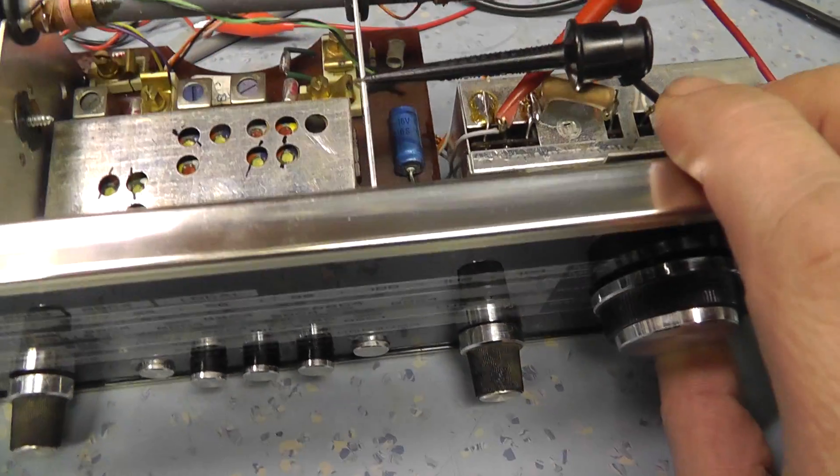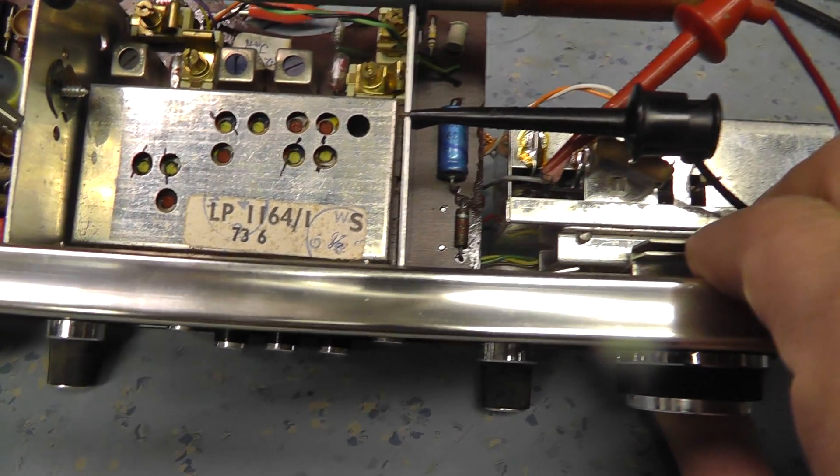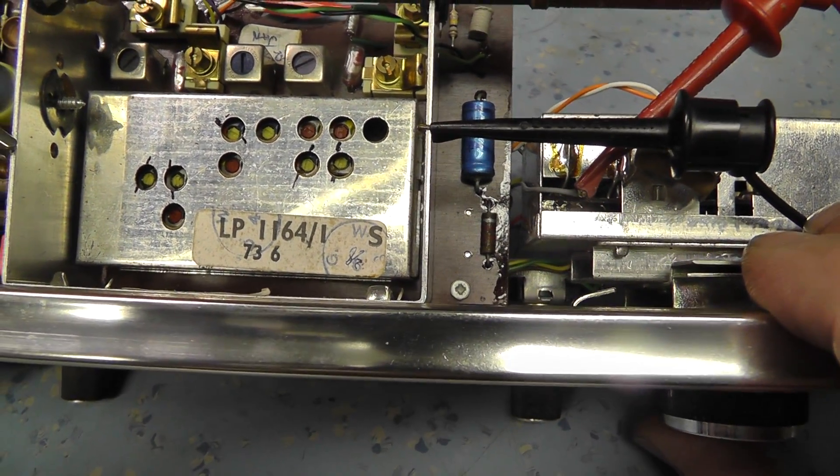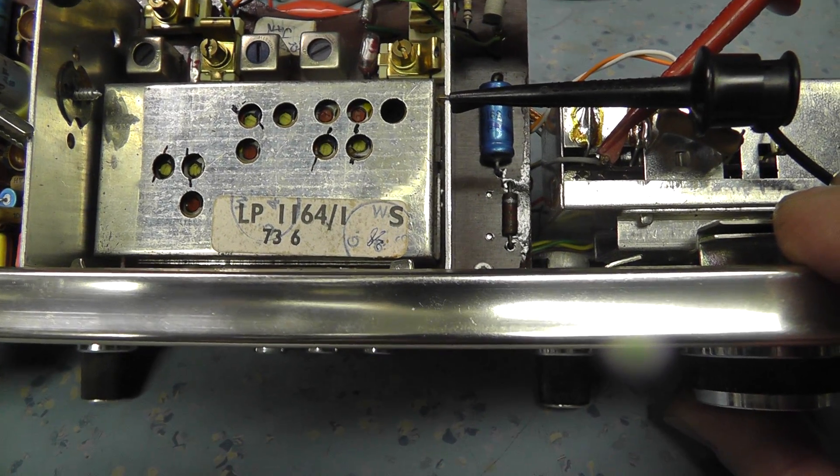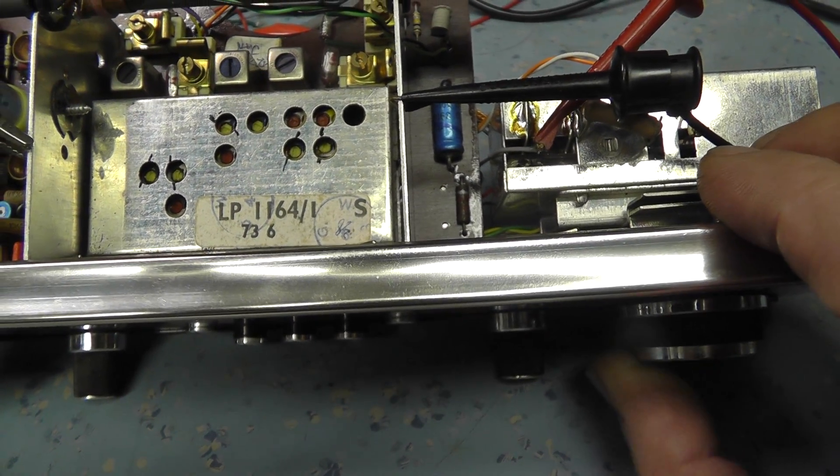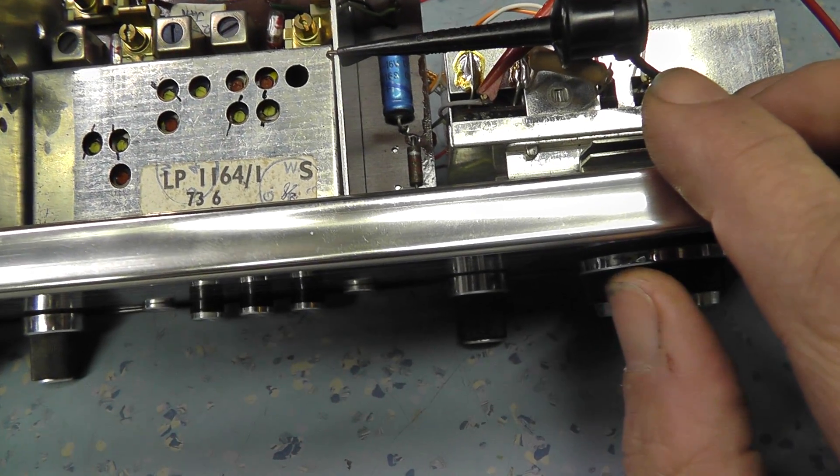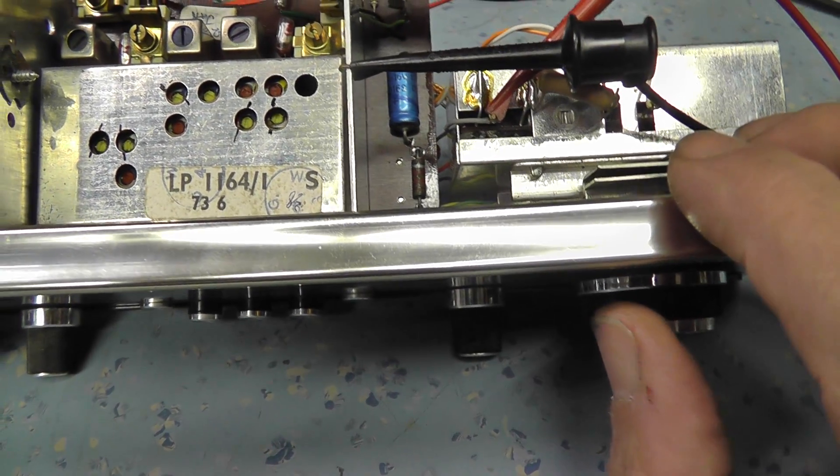I've just replaced the transistors in this IF module as this R707 and the capacitors inside as well. I just want to ascertain that the alignment's correct. So it's a good idea to do a sweep alignment on this radio, which is what I'm planning on doing this evening.